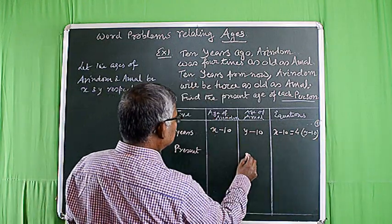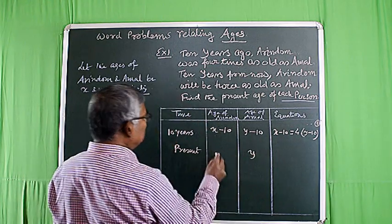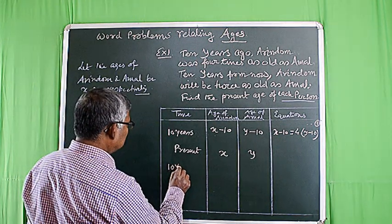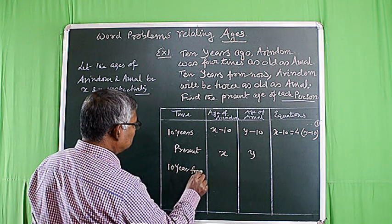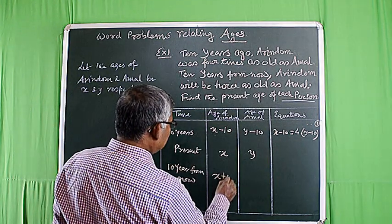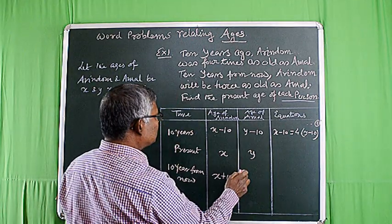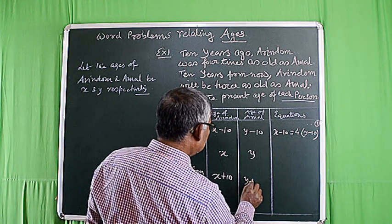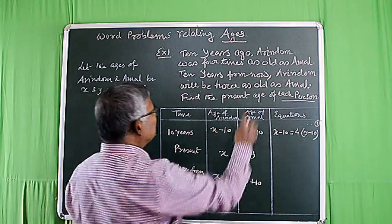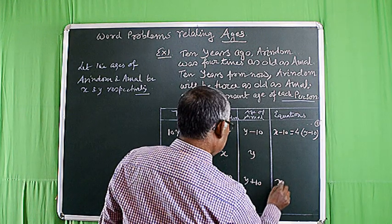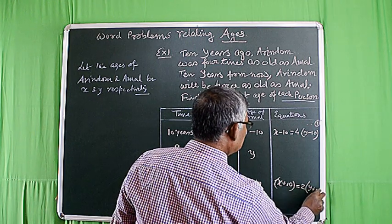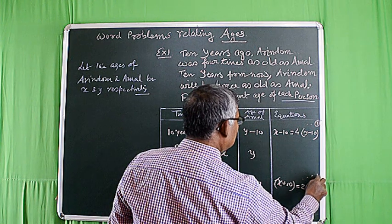Present age of Ongal is Y and present age of Oringham is X. Now, ten years from now, the age of Oringham will be X plus 10. Similarly, the age of Ongal will be Y plus 10. As per the given condition, Oringham will be twice as old as Ongal, so X plus 10 is equal to 2 into Y plus 10. Suppose it is equation number 2.